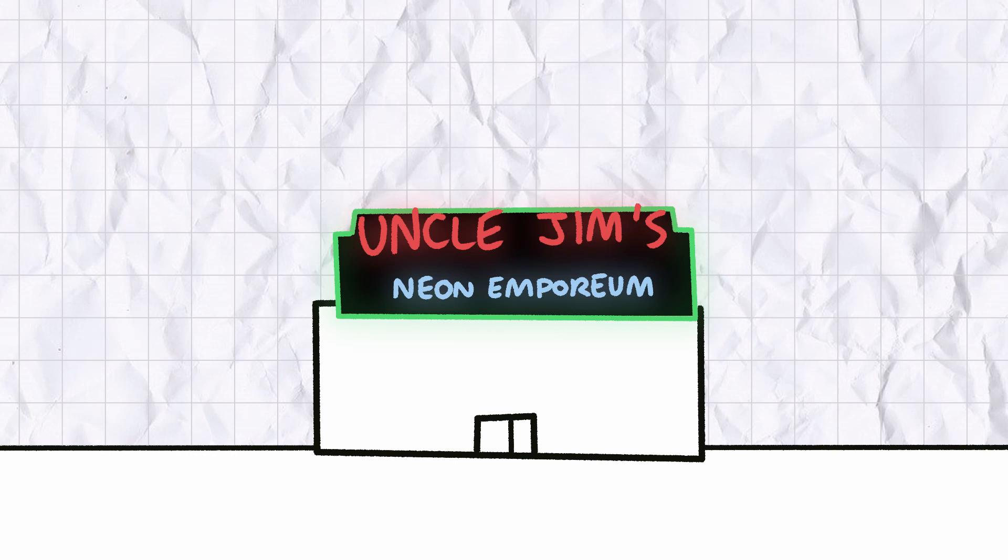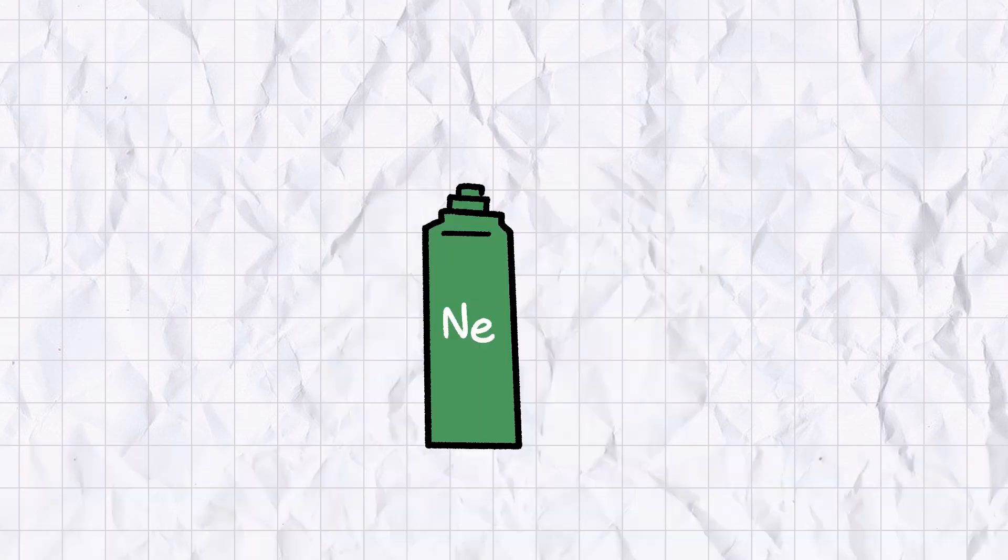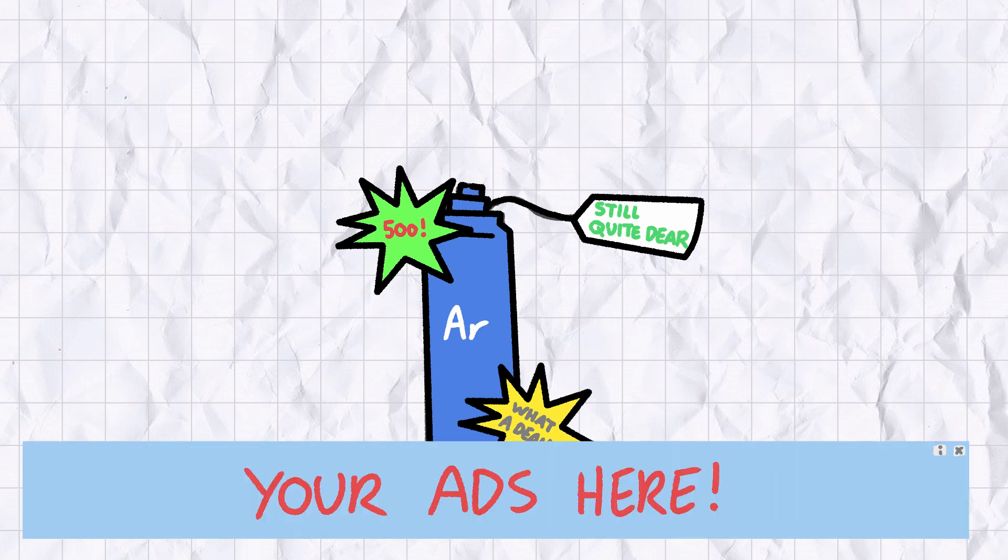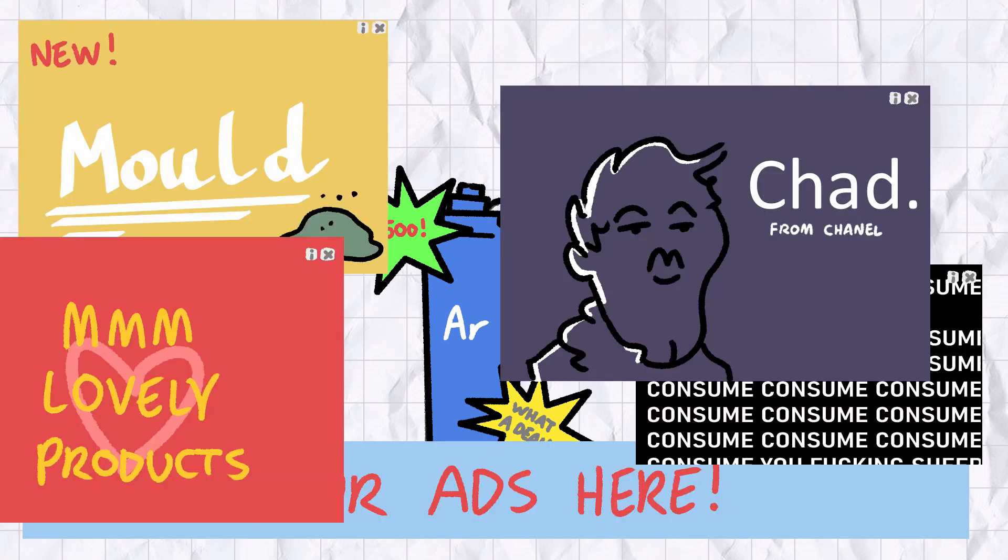Unfortunately, demand for neon signs has slumped in recent years. As mentioned before, neon is pretty rare, and extracting it from the atmosphere can be eye-wateringly expensive. Even argon, which is about 500 times as abundant in the atmosphere as neon, doesn't exactly grow on trees, and the shift towards digital advertising has only hastened neon's irrelevance in the modern world.